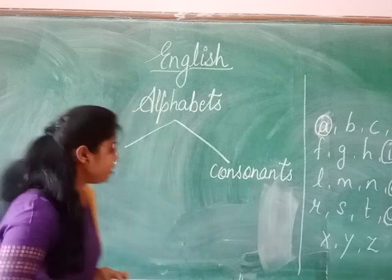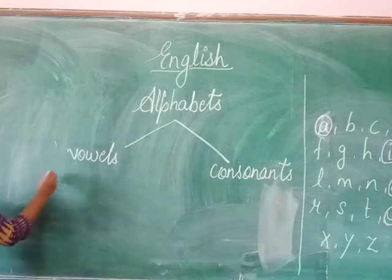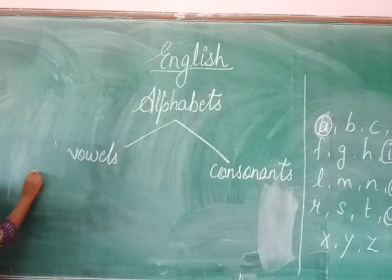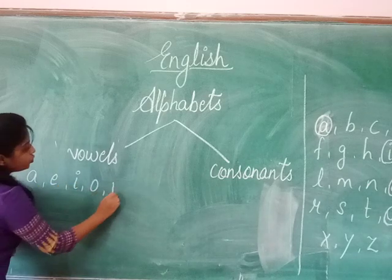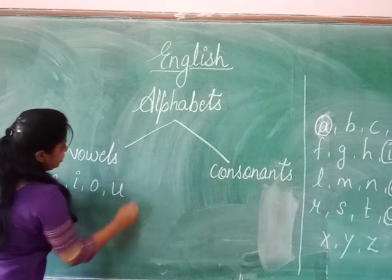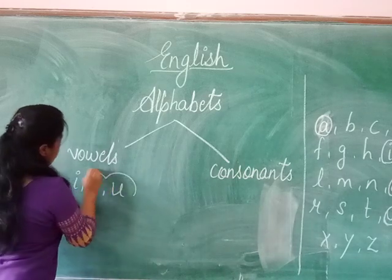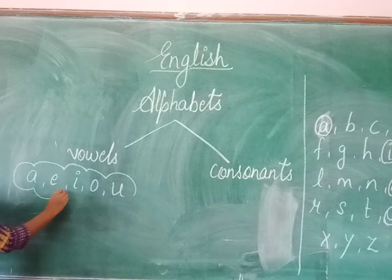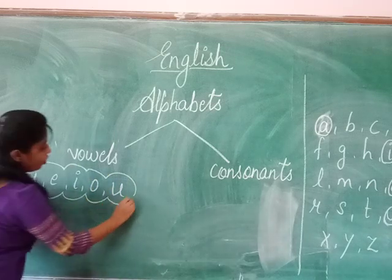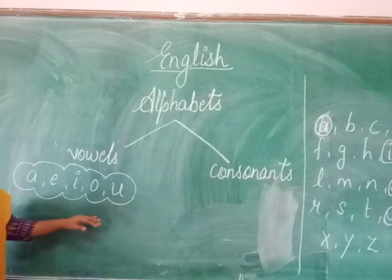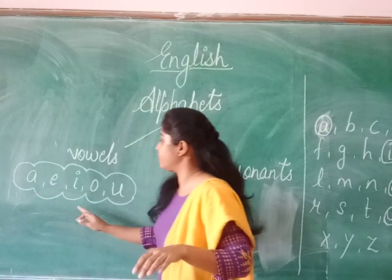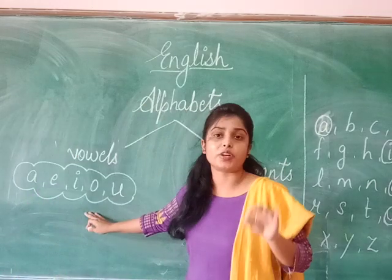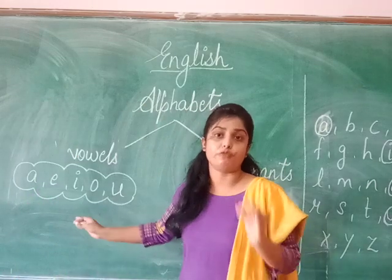Let's write the vowels here: A, E, I, O, U. All these five letters are called vowels.